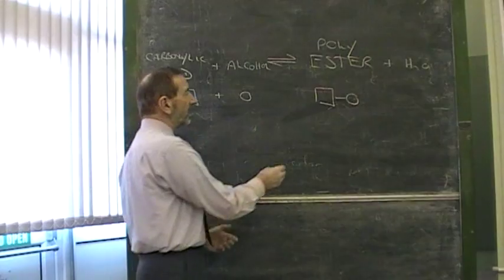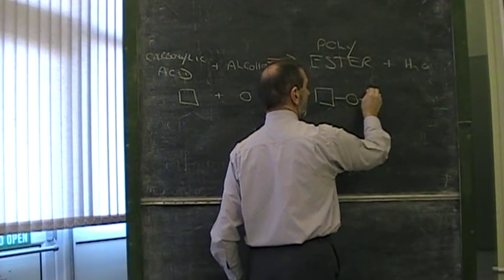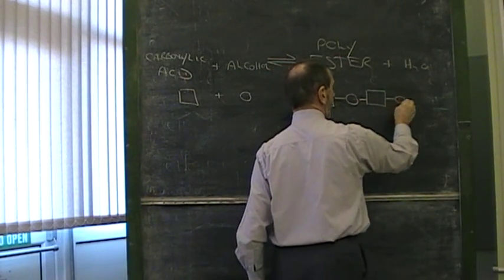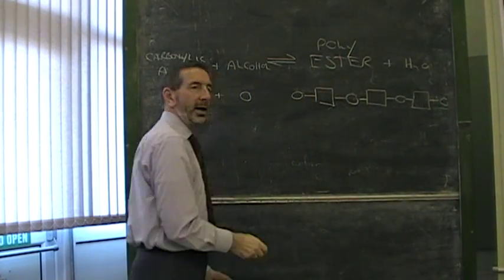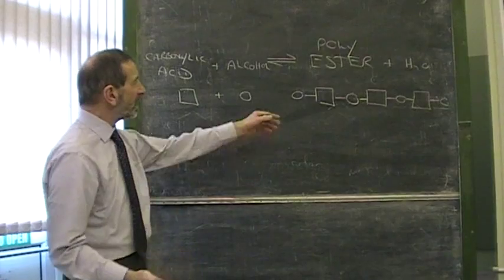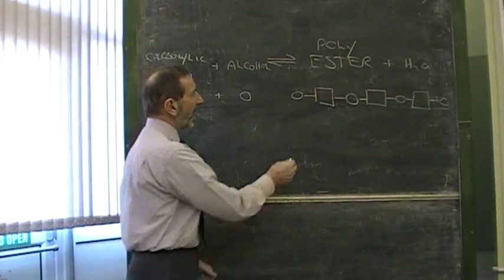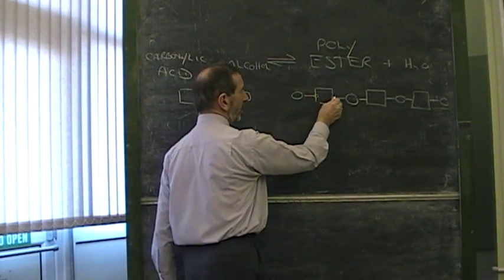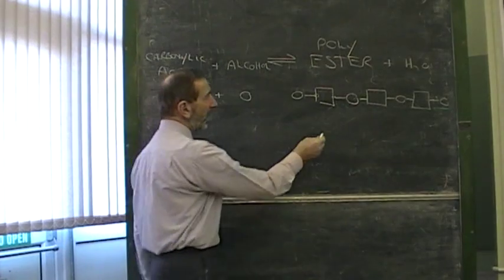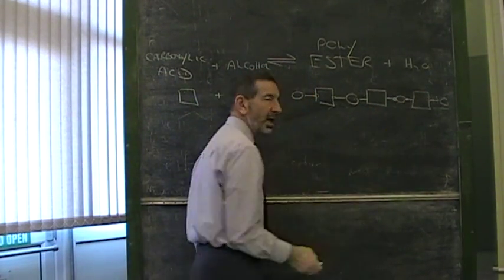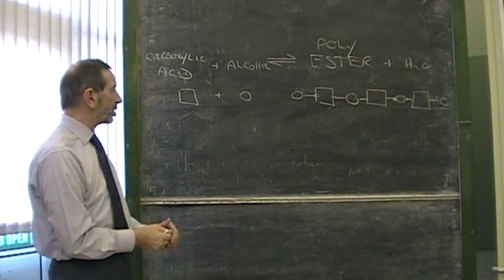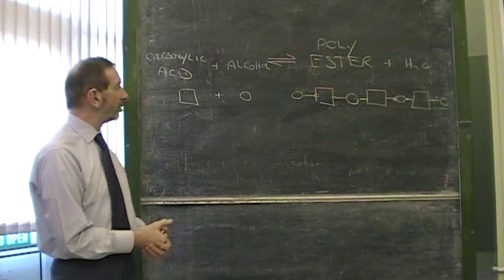But if we want a polyester, we want it to happen repeatedly. We want acid, alcohol, acid, alcohol, acid, alcohol again and again and again. How can we achieve that? You'll see from the simple diagram that the acid will have to be able to join at both ends. Likewise, the alcohol will have to be able to join at both ends. We need molecules with the potential not to make one bond, but two bonds.